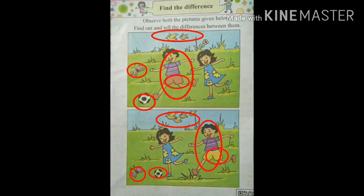Now students, find more differences. Look at the picture carefully — can you find the differences? Yes, I got one more difference. In the first picture there is a flower, and in the second picture there is no flower. Let's circle the flower — take a pencil and circle the flower. Very good.